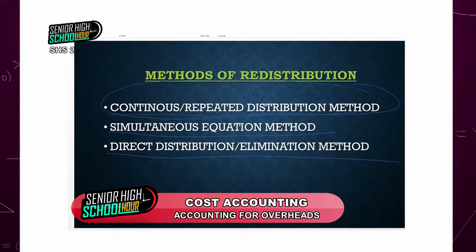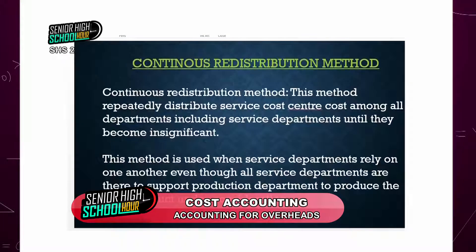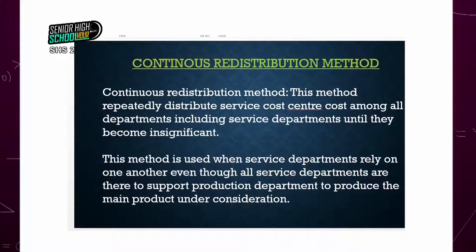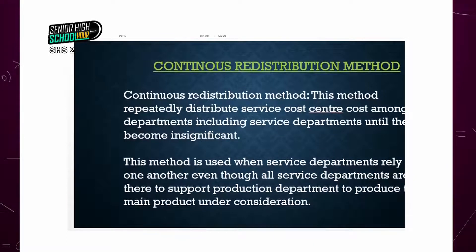Let's look at what the continuous distribution method means. The continual distribution method of reapportioning the service department costs to the production department is a method which distributes the service costs among all the departments, including the service department, until they become insignificant.